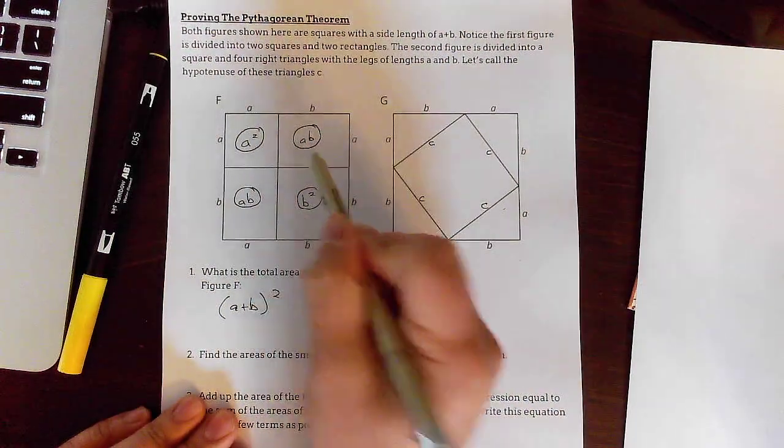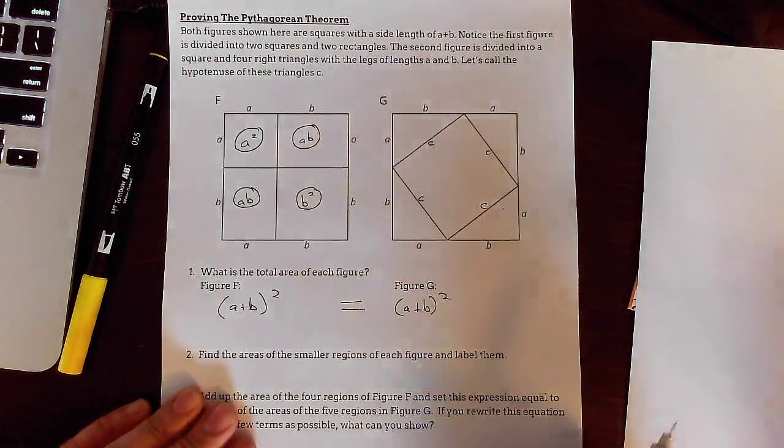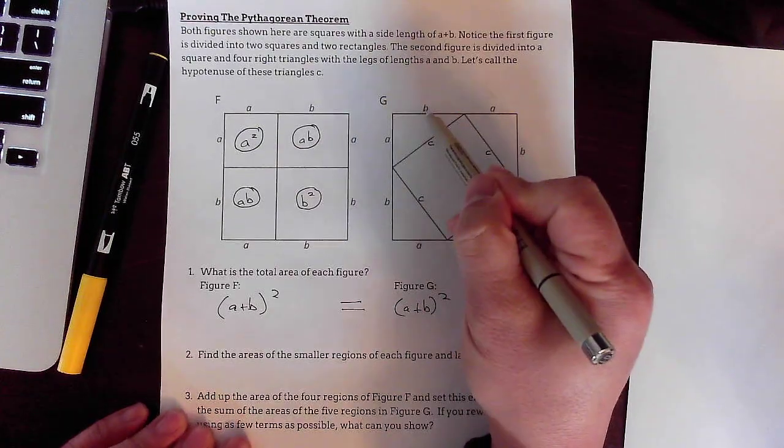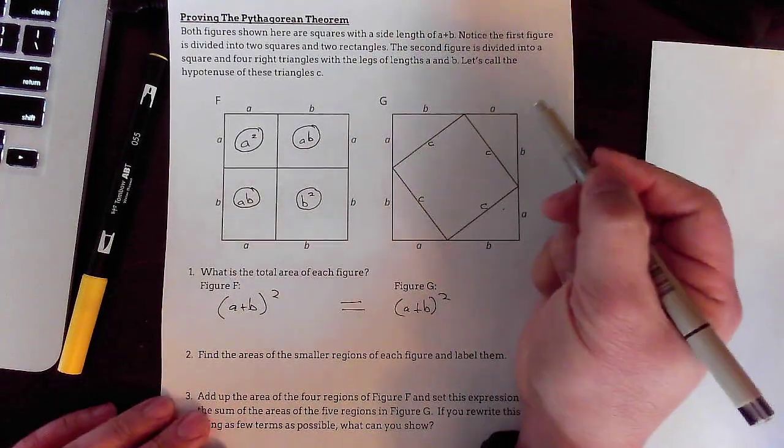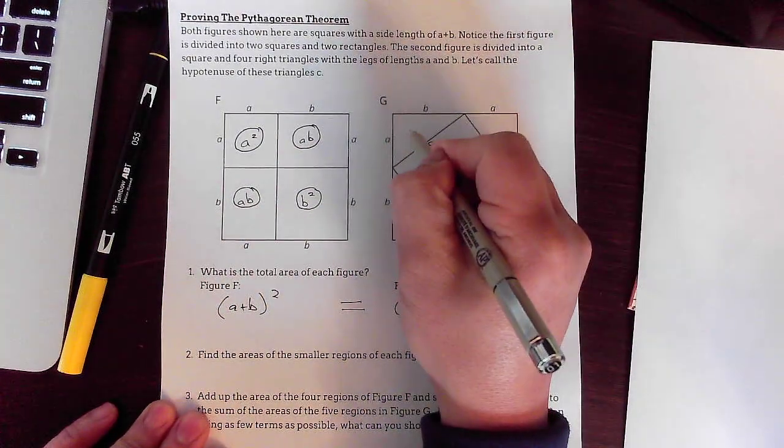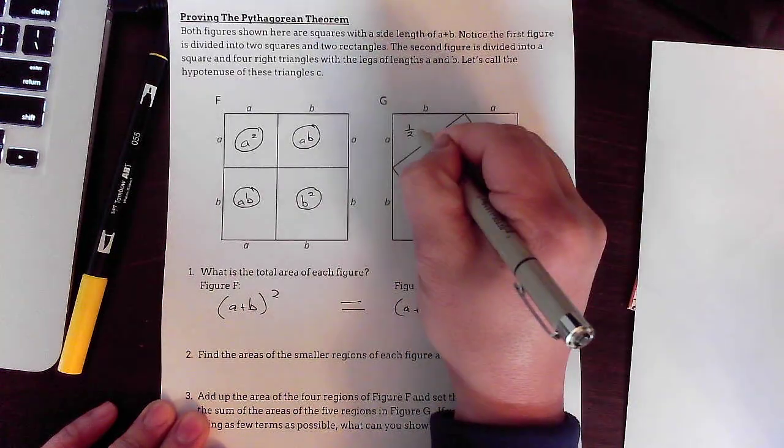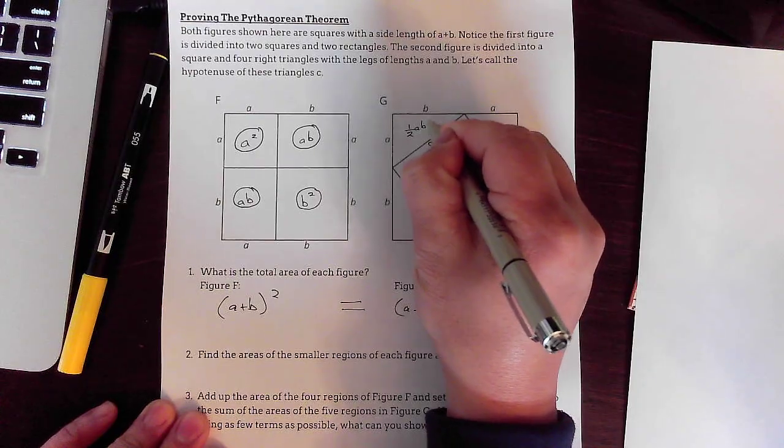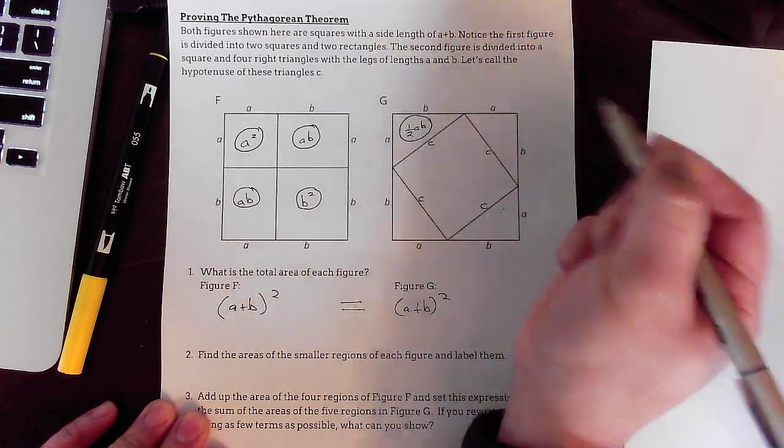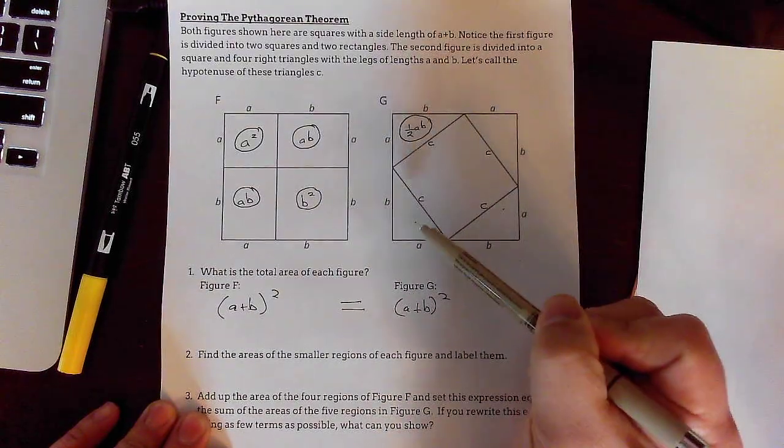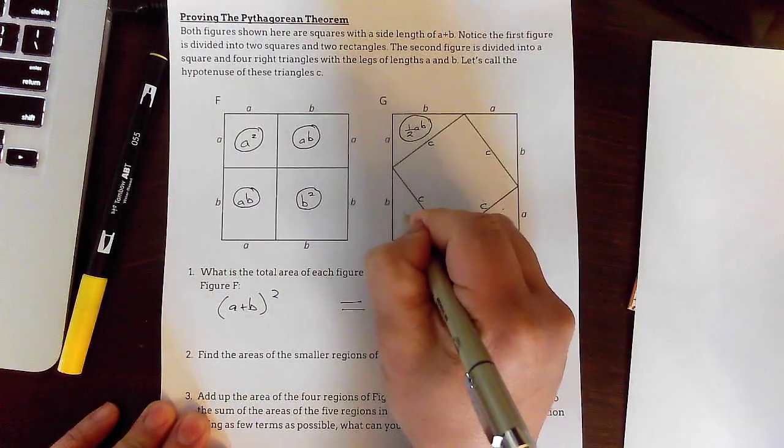So those are those four areas. And then for this side, oh my goodness. I have AB here, but it's a triangle. And that's just half of a rectangle. So I'm going to call that one half A times B. Luckily, this triangle is the same as these other three triangles.